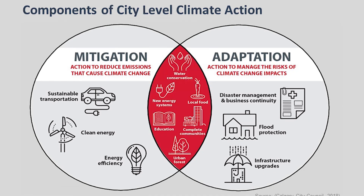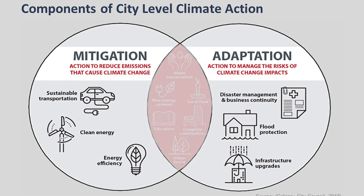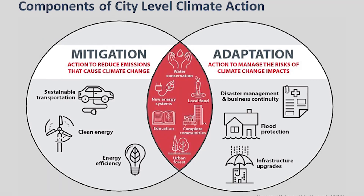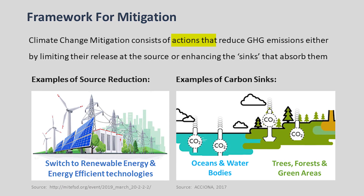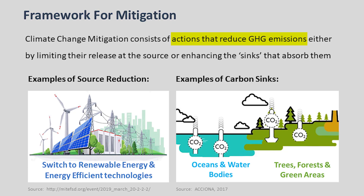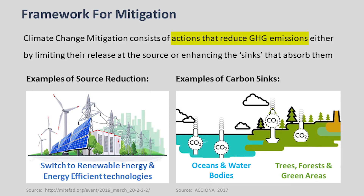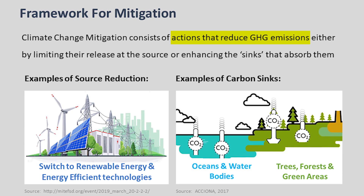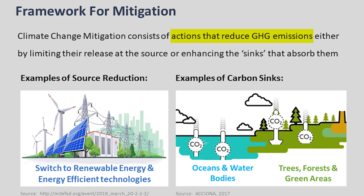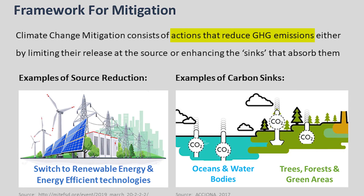Towards this objective, a climate change action plan integrates components of mitigation and adaptation for emission reduction and resilience building respectively. Climate change mitigation consists of actions that reduce GHG emissions either by limiting their release at the source or enhancing the sinks that absorb these gases. Planning for such mitigation actions begins with the development of a GHG inventory that documents and quantifies the emissions from different activities within a city — because as one says, we can't manage what we can't measure.